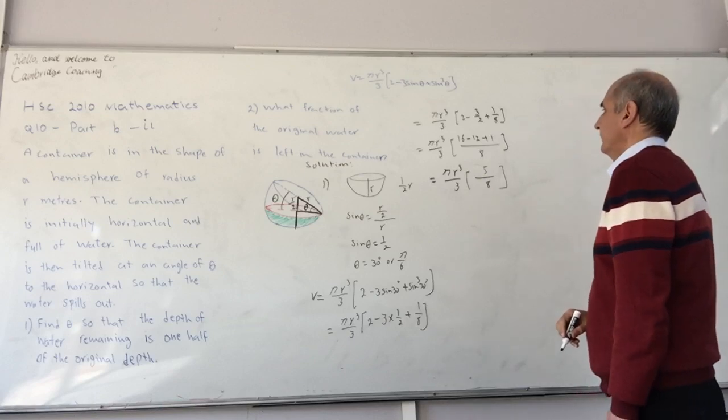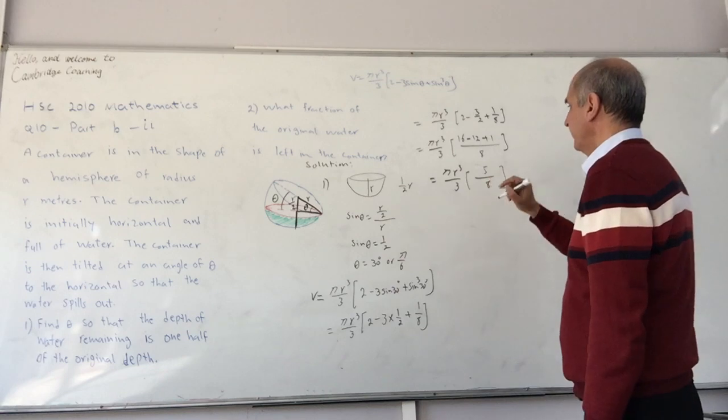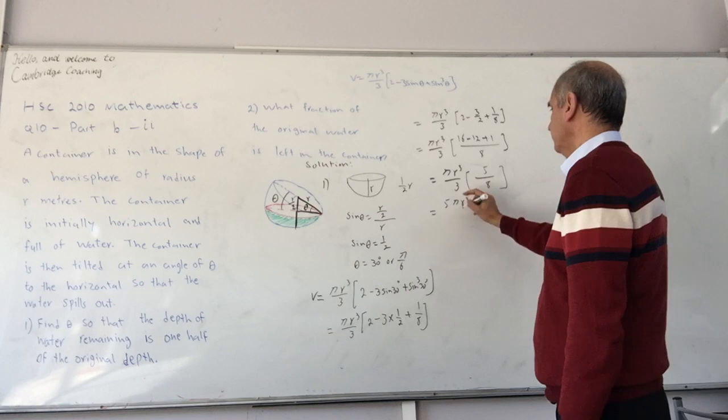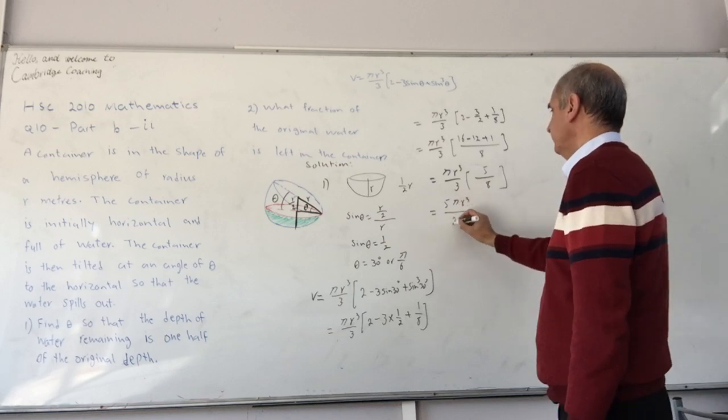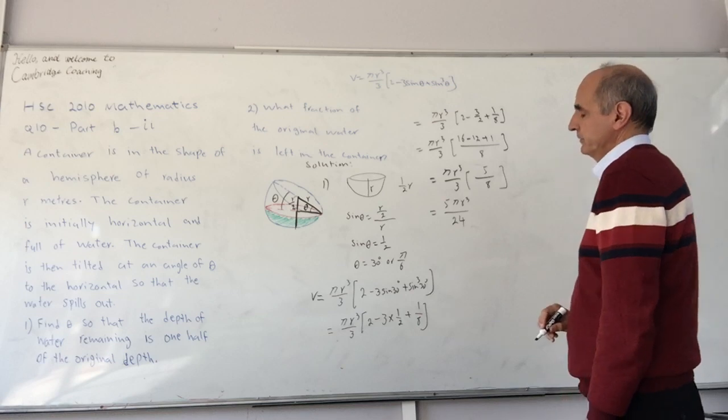That is 5 on 8, and that becomes 5 pi r cubed, 8 times 3 is 24. That is the volume we have left inside.